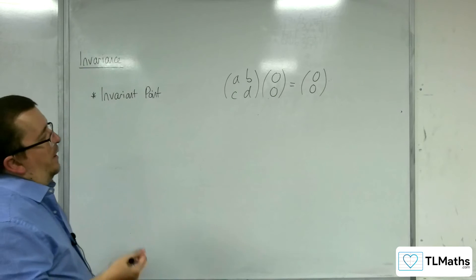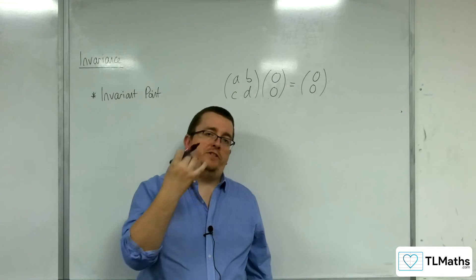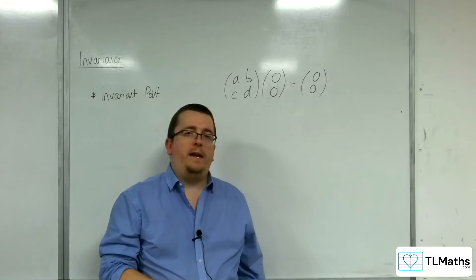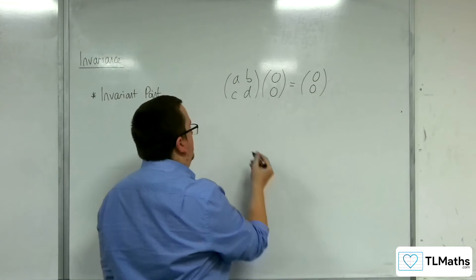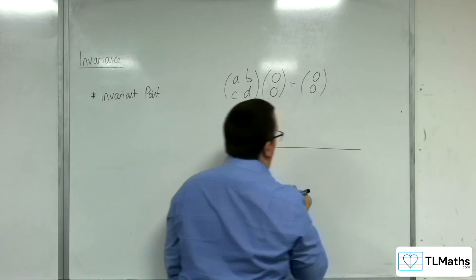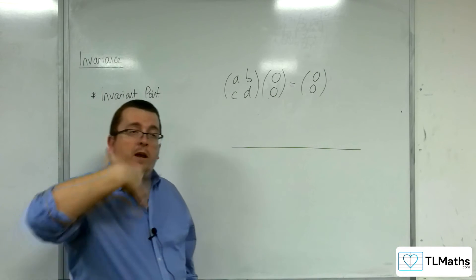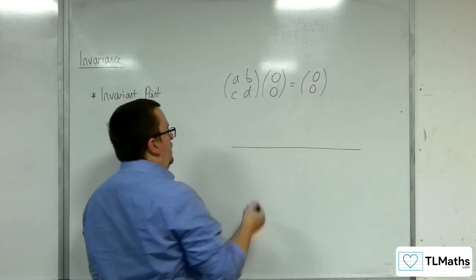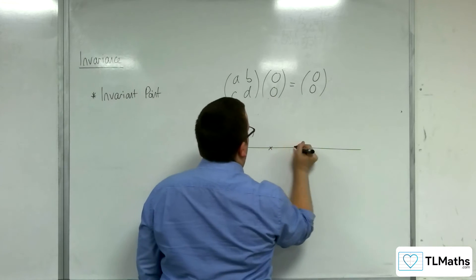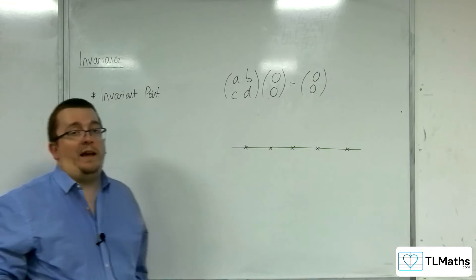Now, I also mentioned that you could have a line of invariant points. So what that means is that you have a line, well points that are on a line, that once the transformation is applied, remain fixed.